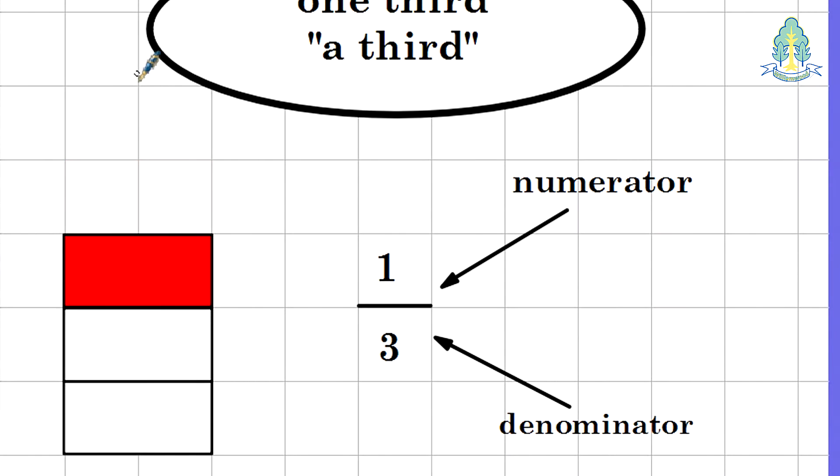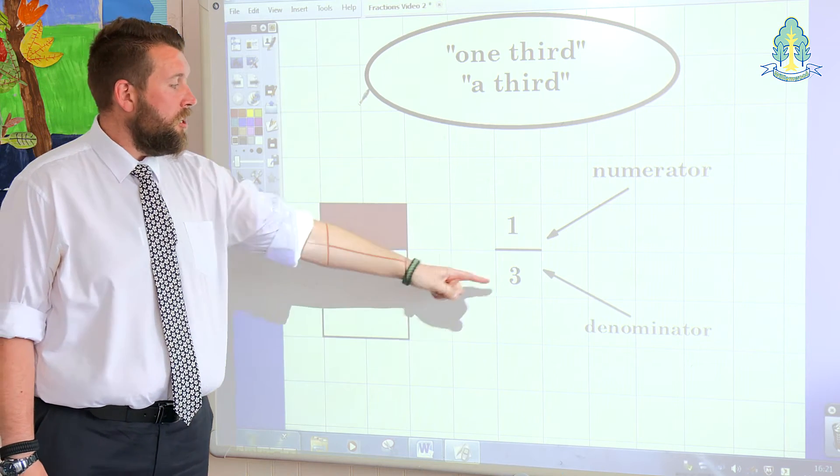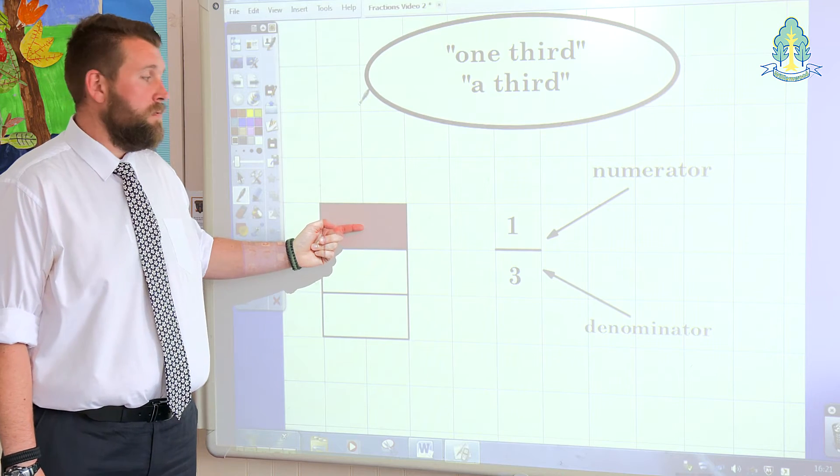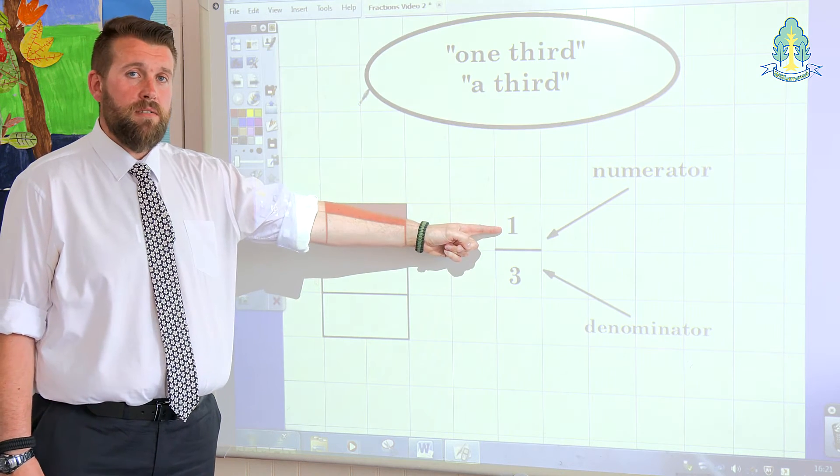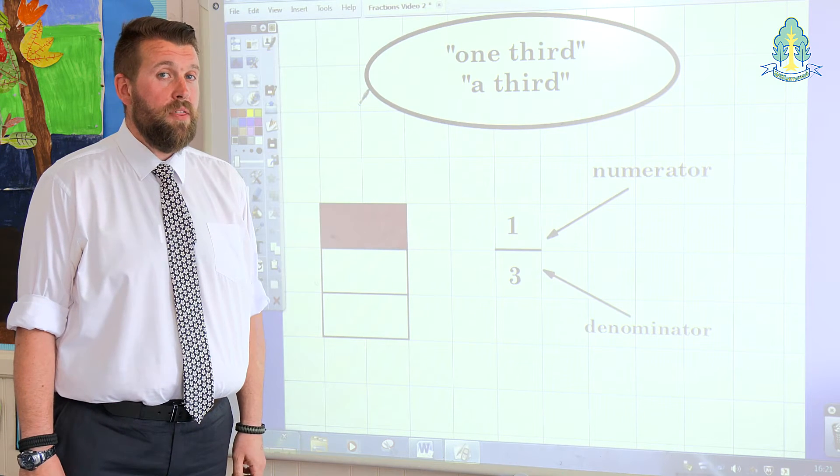As you can see in this example, we have 1, 2, 3 parts to the whole. So the denominator is 3. We have 1 part taken from the whole. So the numerator is 1. This is referred to as 1 third and not 1, 3.